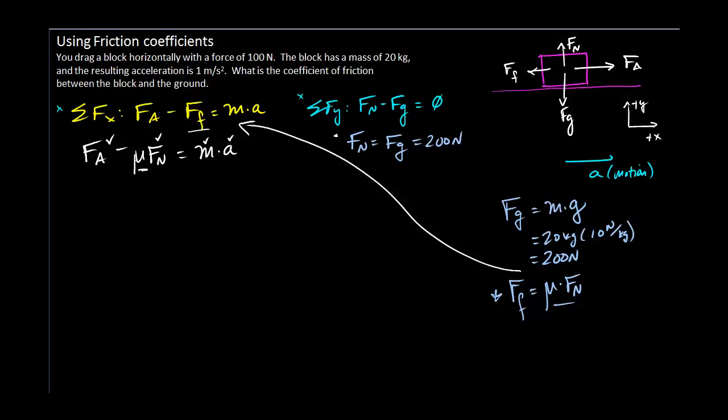So my applied force was 100 newtons. Bringing this to the other side and solving for mu, we get mu is going to equal 100 minus 20 over 200, which is 80 over 200. So mu is equal to 0.4.